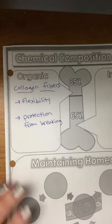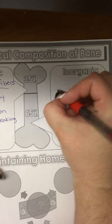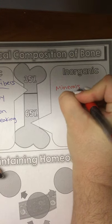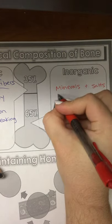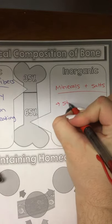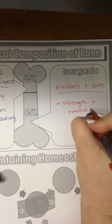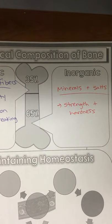And what about the inorganic? So this is minerals and salts. Salts is a chemistry term, it just means pretty much anything with an ionic bond, so it doesn't mean like table salt. Minerals like calcium, phosphorus, a bunch of them, mostly calcium, but there's a lot of other ones too. And they add strength and hardness to the bone.